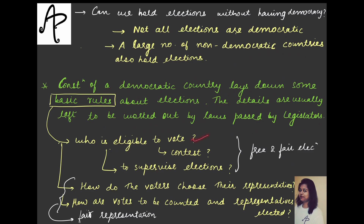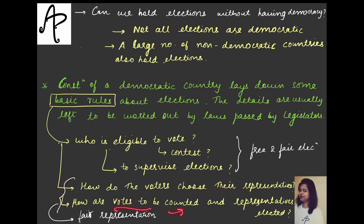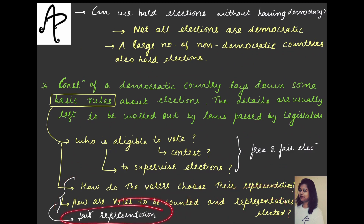The basic constitutional rules of election answer: who is eligible to vote, who is eligible to contest, and who will supervise the election — ensuring free and fair elections. Other rules cover how voters choose their representative, how votes are counted, and how a representative is elected — all ensuring fair representation.